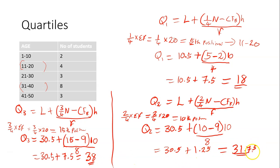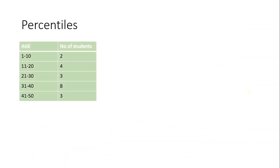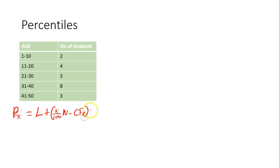The second quartile is 31.75, and the first quartile is 18. So let's look at the next one, which is percentiles. For percentiles, the formula is L plus into brackets K over 100 N minus CFB times H divided by F. This time it's over 100 — in the previous formula we used over 4.